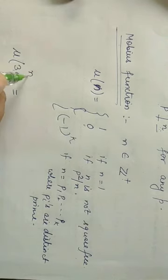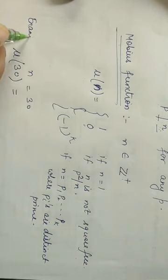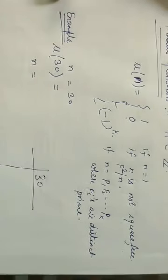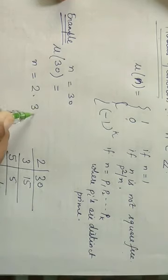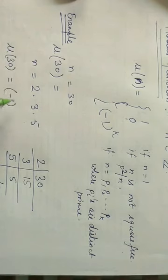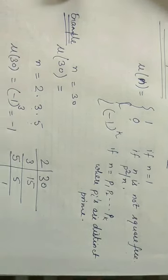Let's calculate this for some values of n. Suppose n = 30. What will be μ(30)? First, write the prime factorization of 30. We can write 30 = 2 × 3 × 5. So 30 is expressed as a product of 3 distinct primes. Therefore μ(30) = (−1)^3 = −1.